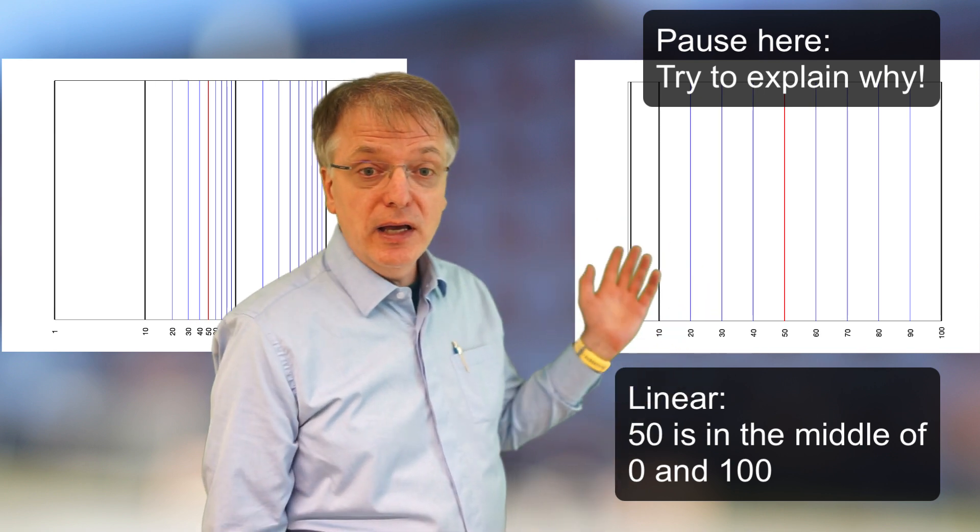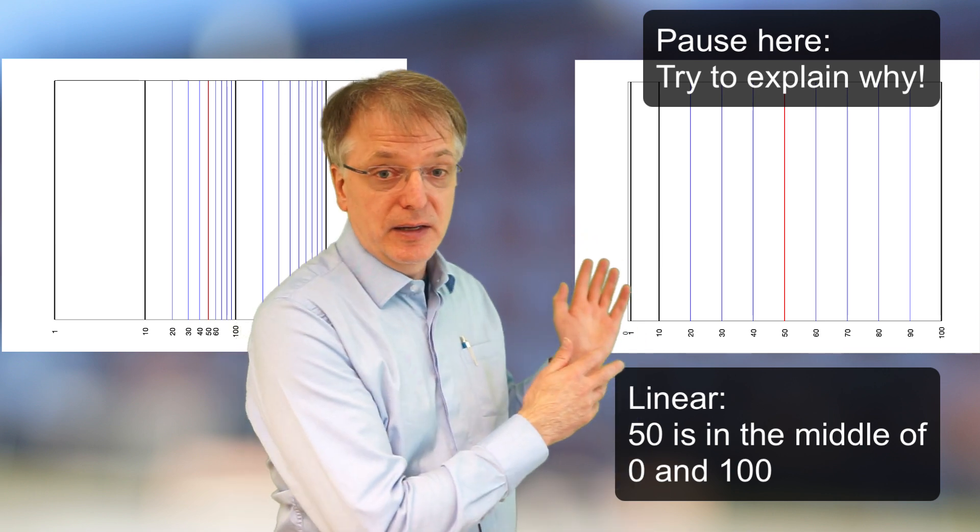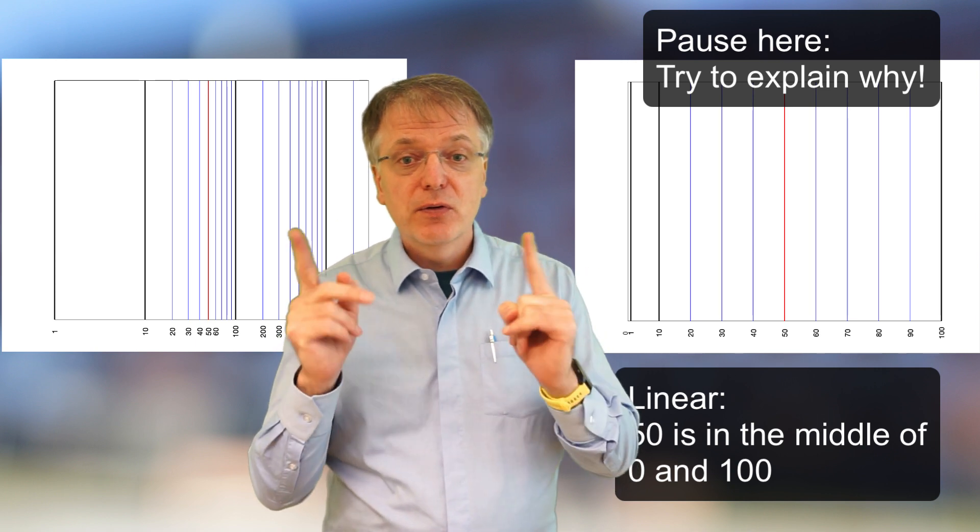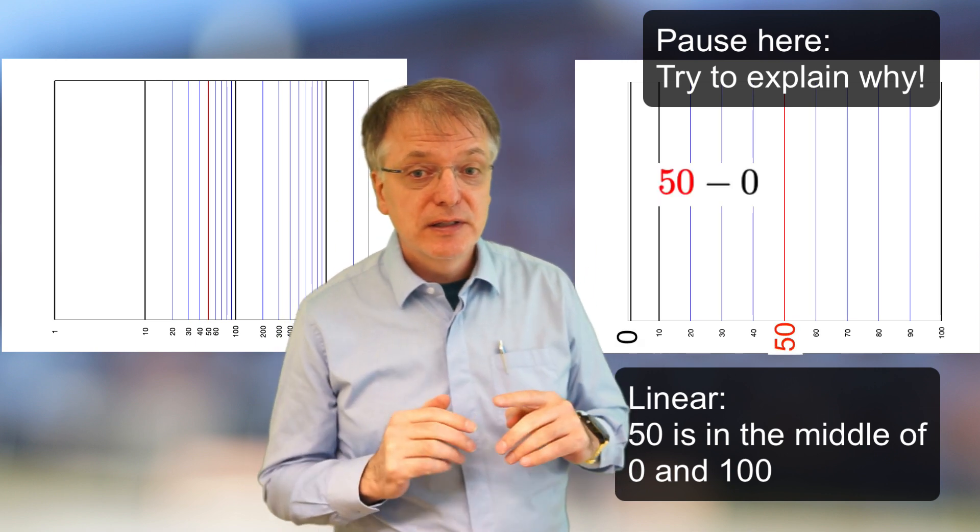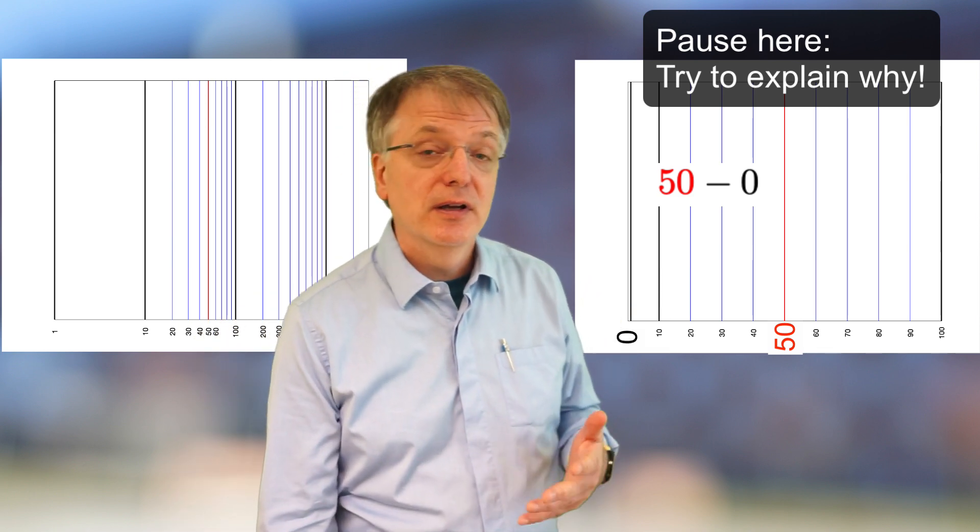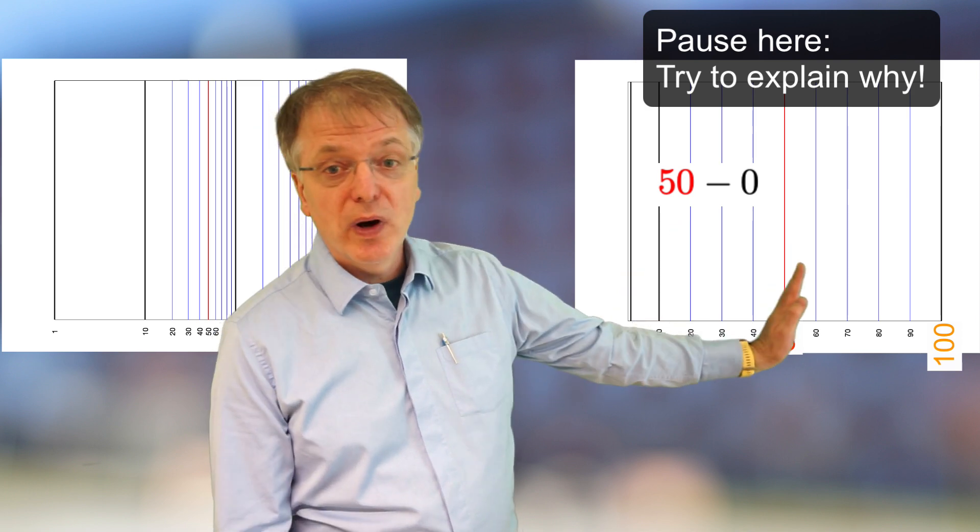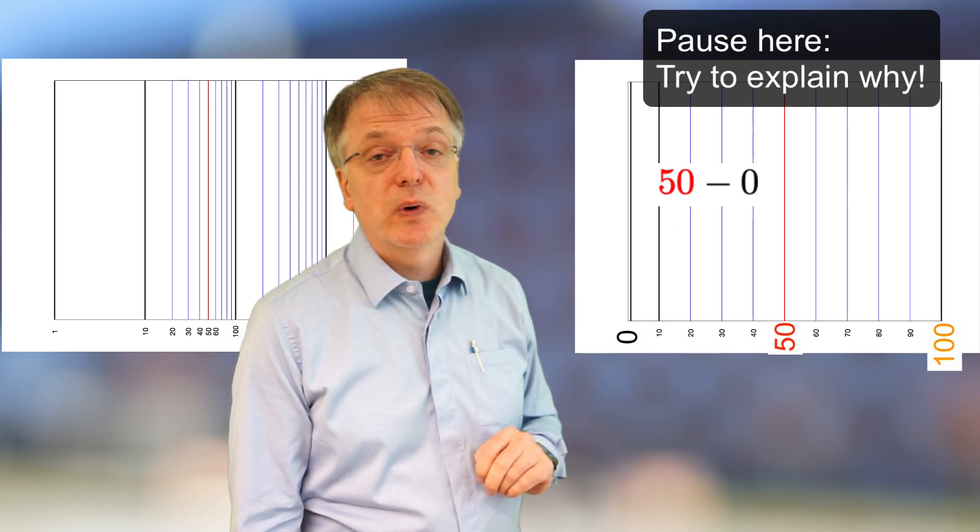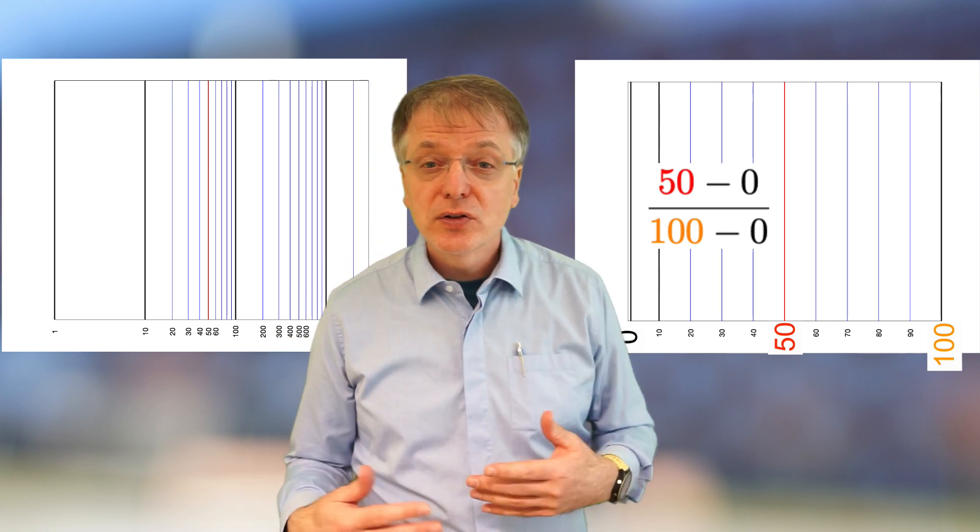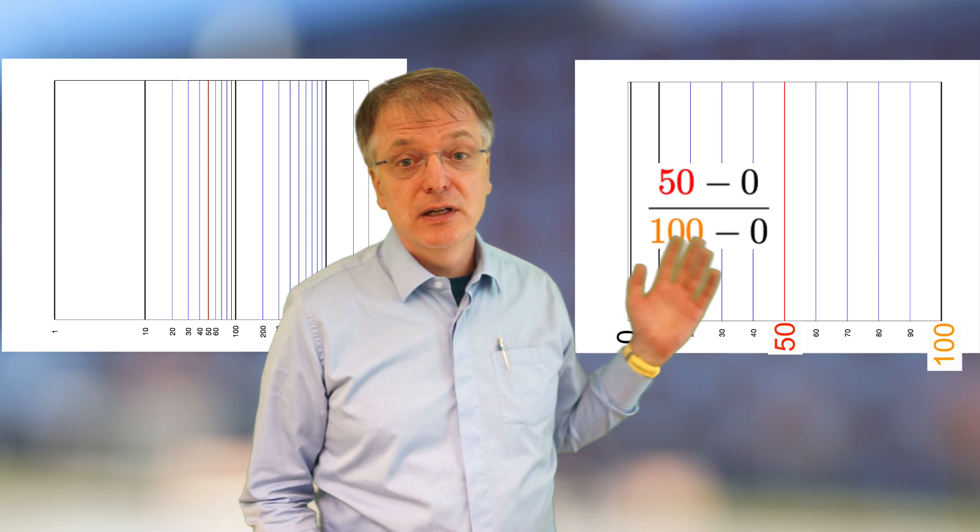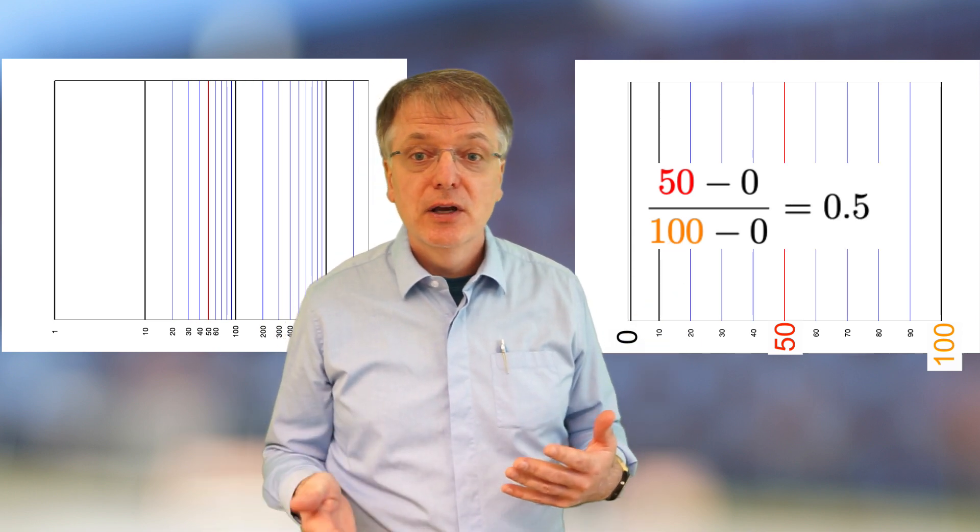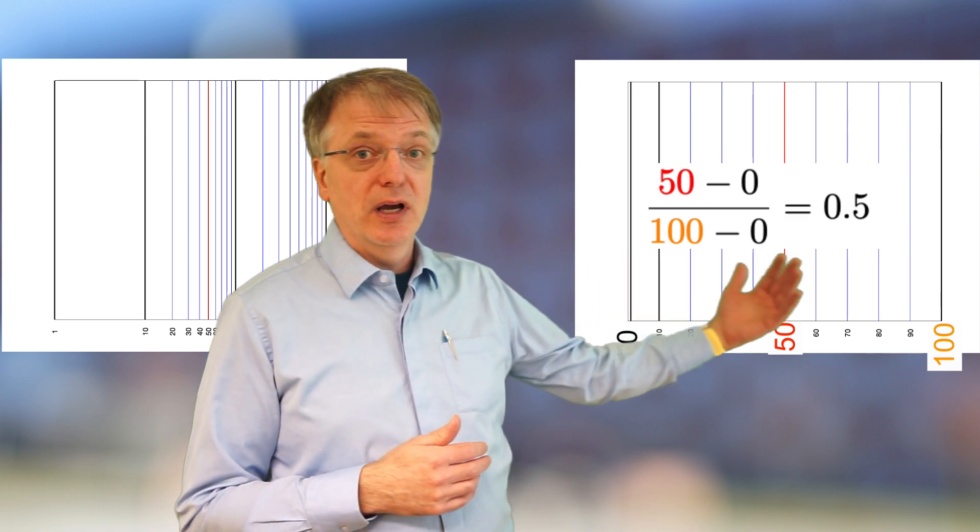The way I would explain this is that in a linear diagram the distance between two values is simply proportional to the difference of their values. Thus the distance between 50 and 0 is 50 minus 0 equals 50 in some unit. The distance between 100 and 0 is 100 minus 0, so 100 in the same unit. Consequently, the point where you find 50 is 50 divided by 100, 0.5, which is 50% of the way between 0 and 100.